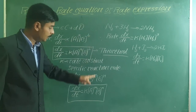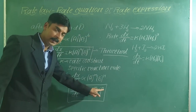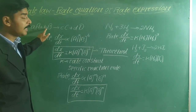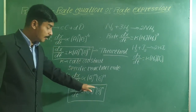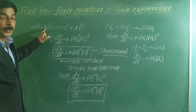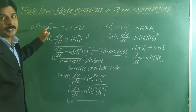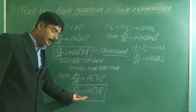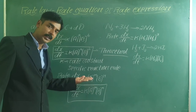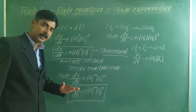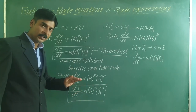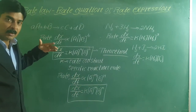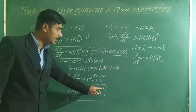M and N have no relation with the stoichiometric coefficients A and B — they may or may not be equal. This is called the experimentally determined rate equation, or rate law. To find M and N, you must conduct experiments by changing the concentrations of the reactants.